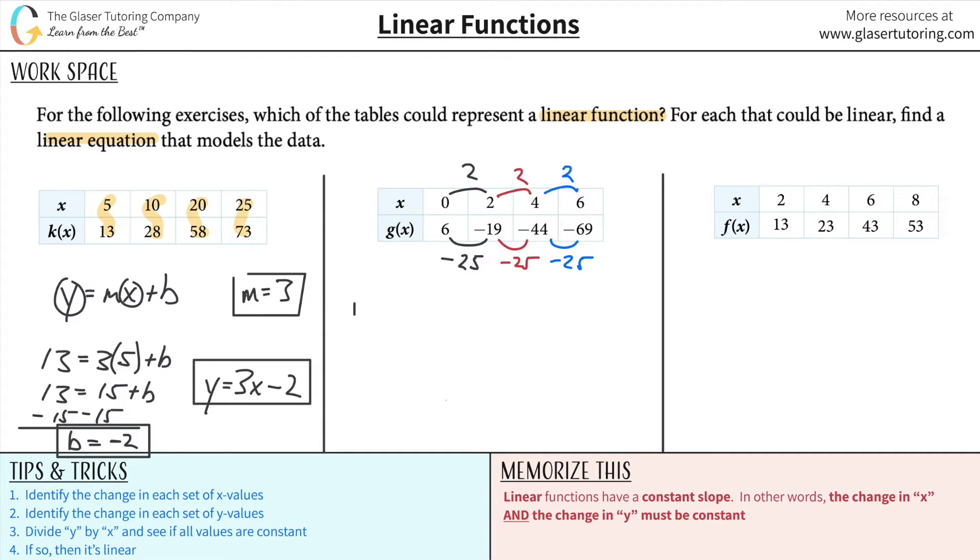Just take one of them. Slope is always change in y over change in x. It's going to be negative 25 divided by 2. I will leave it this way. So this is negative 25 over 2. Since I know the slope now, I need to find the y-intercept. We're going to do that by using our formula, y equals mx plus b.